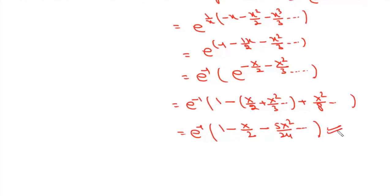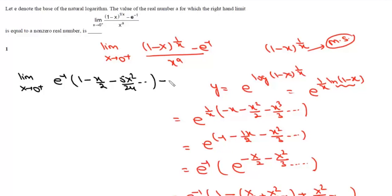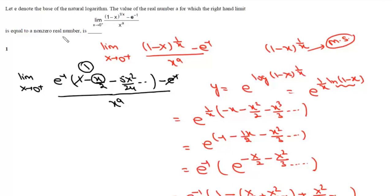Now we substitute this expansion into the limit. The limit as x tends to 0 positive becomes: [e^(minus 1)(1 minus x/2 minus 5x²/24) minus e^(minus 1)] divided by x^a. The e^(minus 1) terms cancel, leaving the minimum power of x in the numerator as 1. For the limit to equal a non-zero real number, the minimum power in the denominator must also be 1, so a must equal 1.